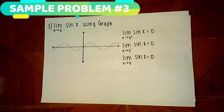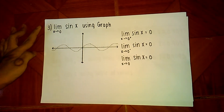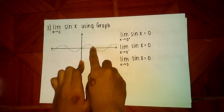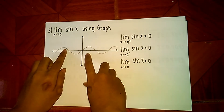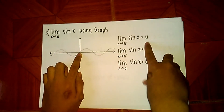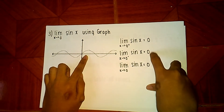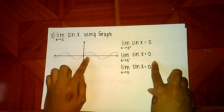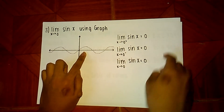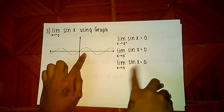Here is another example. We will find the limit of sin x as x approaches 0 using the graphical method. As you can see on the graph, at the right side of 0, the y values approach 0. Also, from the left side of 0, the y values approach 0. So the right-hand limit of the function at 0 is 0, and the left-hand limit is also 0. Since the right-hand and left-hand limits are equal, the limit of sin x as x approaches 0 is equal to 0.